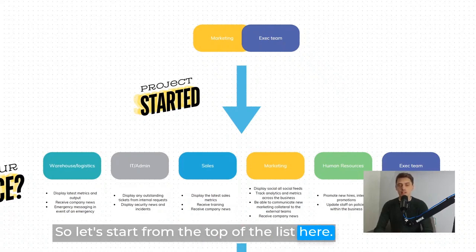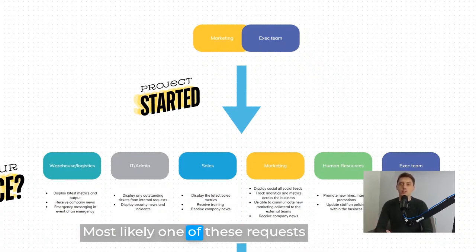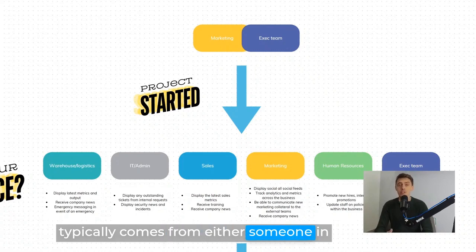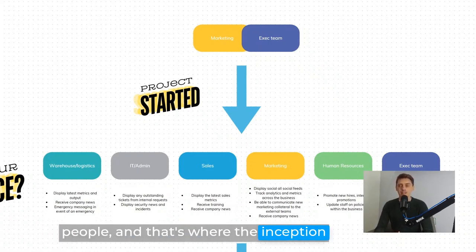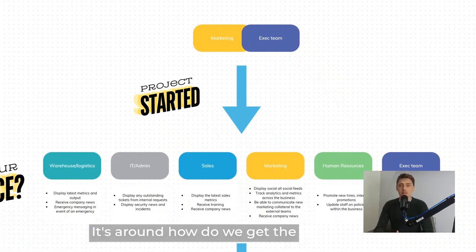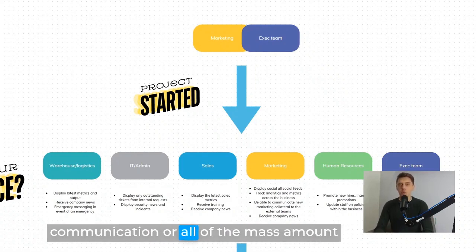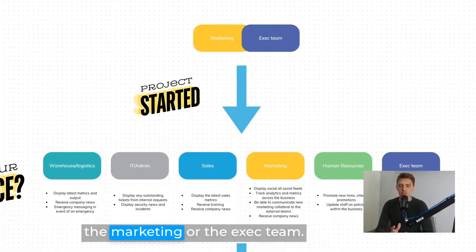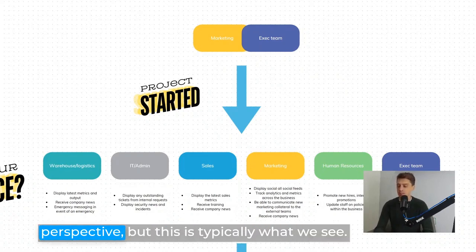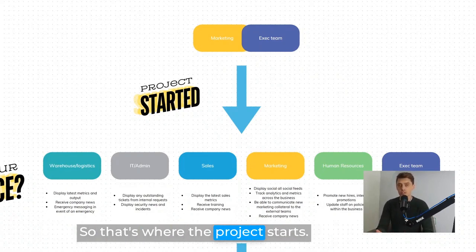Let's start from the top of the list. Most likely, one of these requests typically comes from either someone in marketing or an exec-level decision maker — someone that says we need to improve communication or we need to facilitate faster information being delivered to people. That's where the inception of this conversation typically starts: how do we get the mass amount of information we need to out to our staff, employees, or even those visiting.